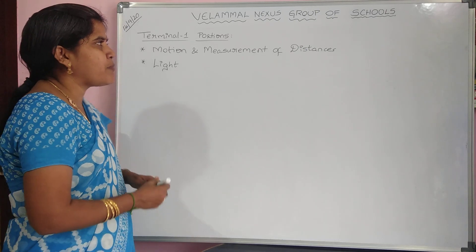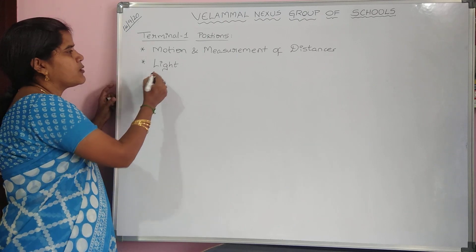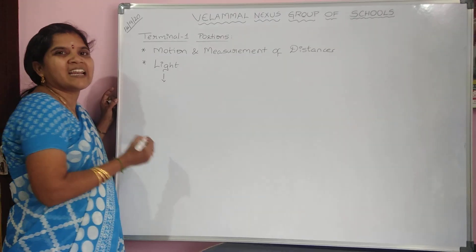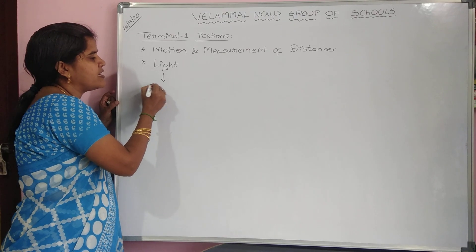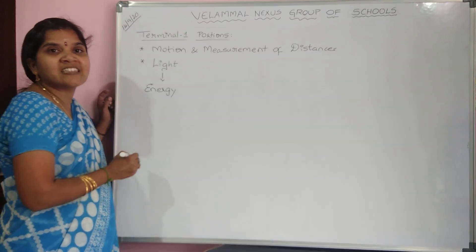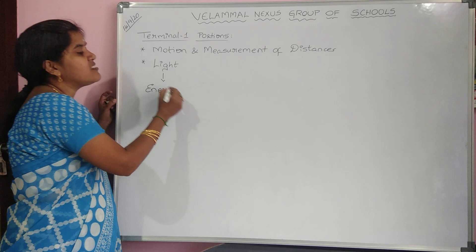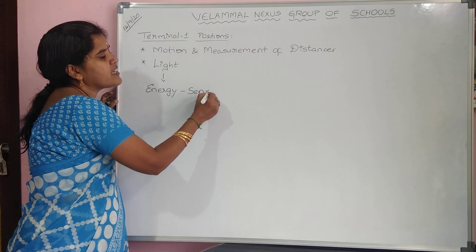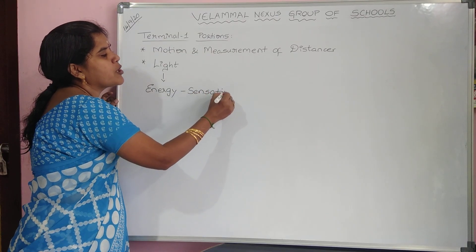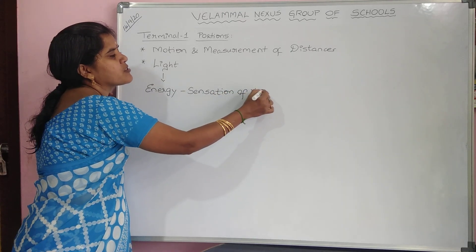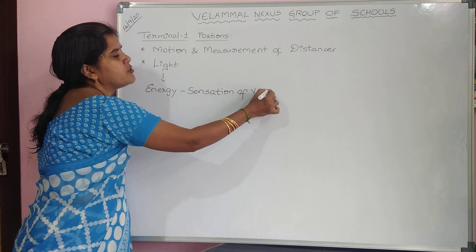So in light, what is meant by light? Light is nothing but a form of energy which causes us the sensation of vision. It gives us the sensation of vision — because of light we are able to see.